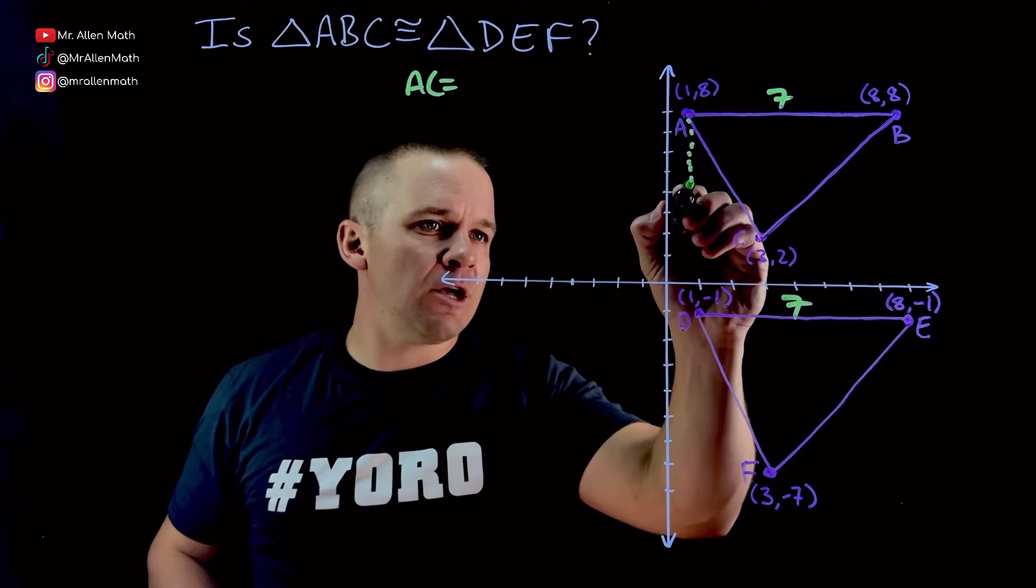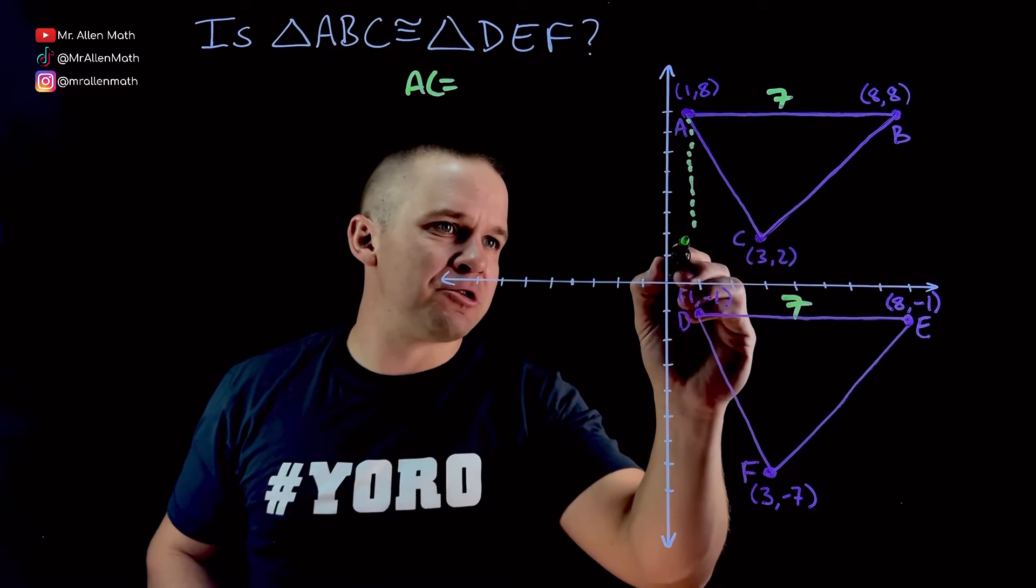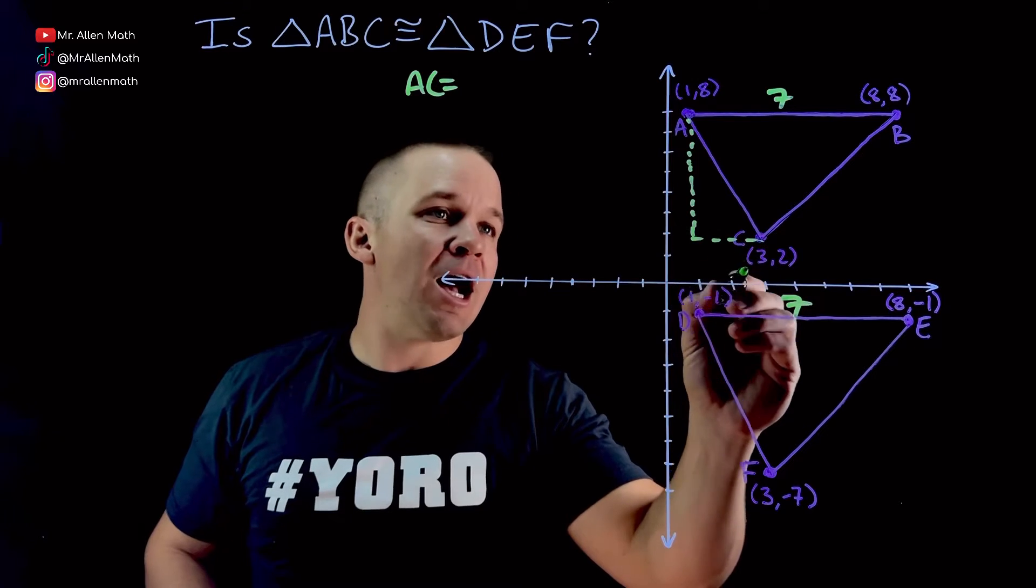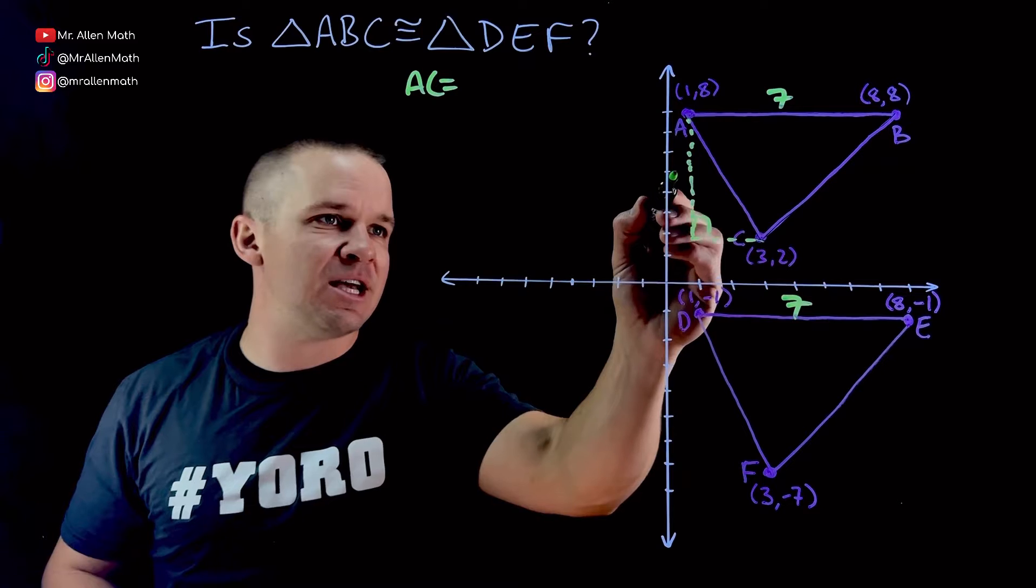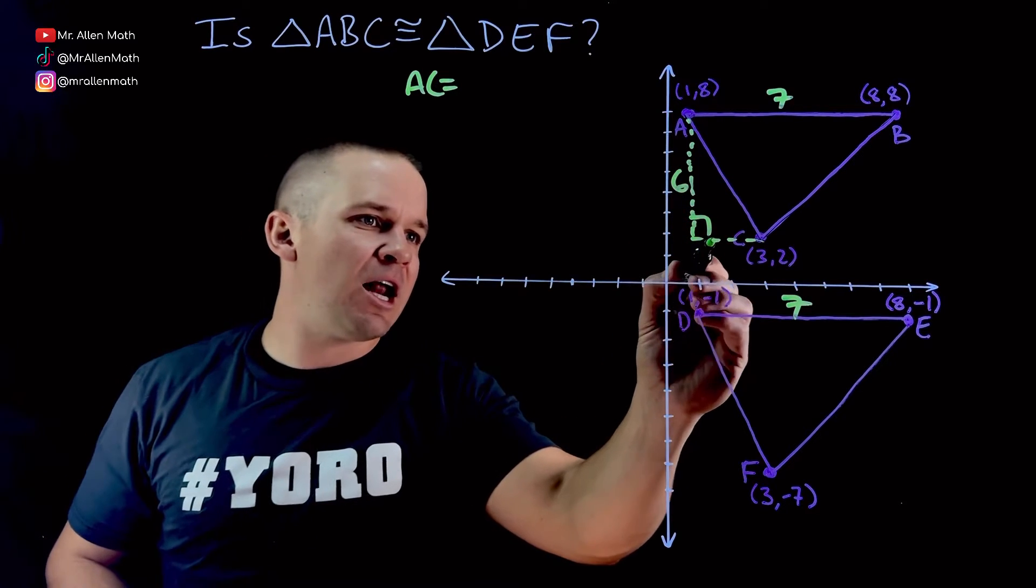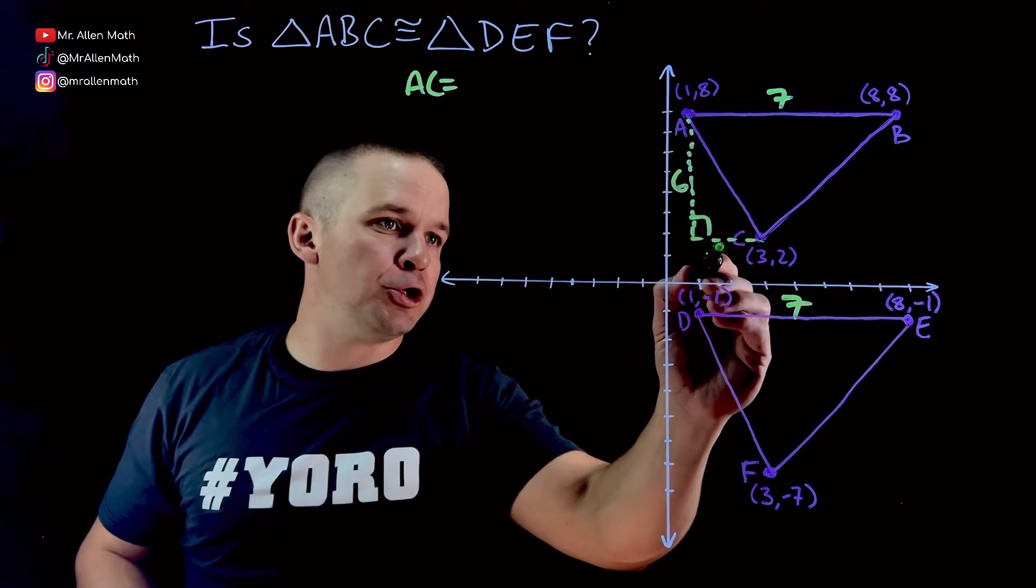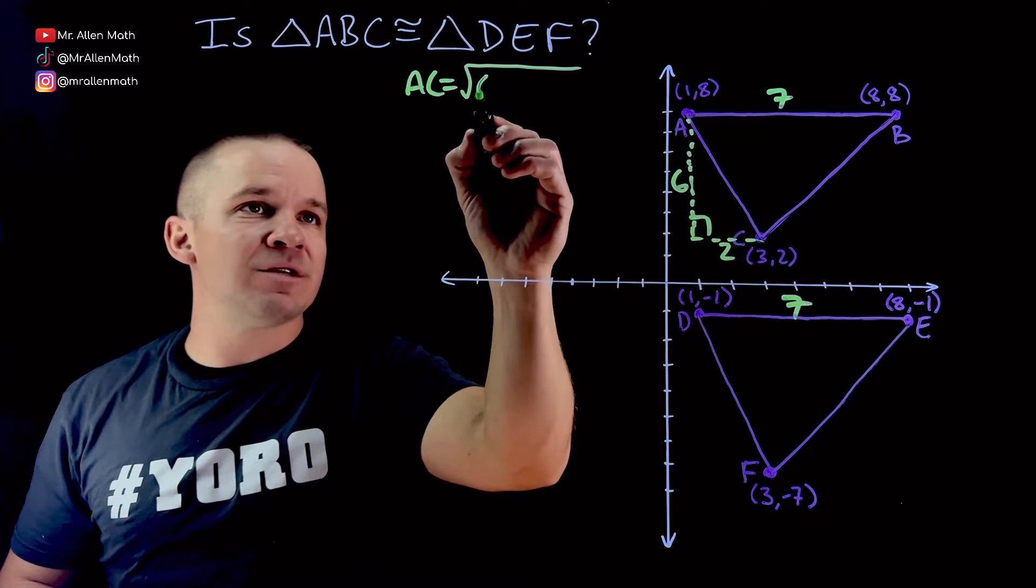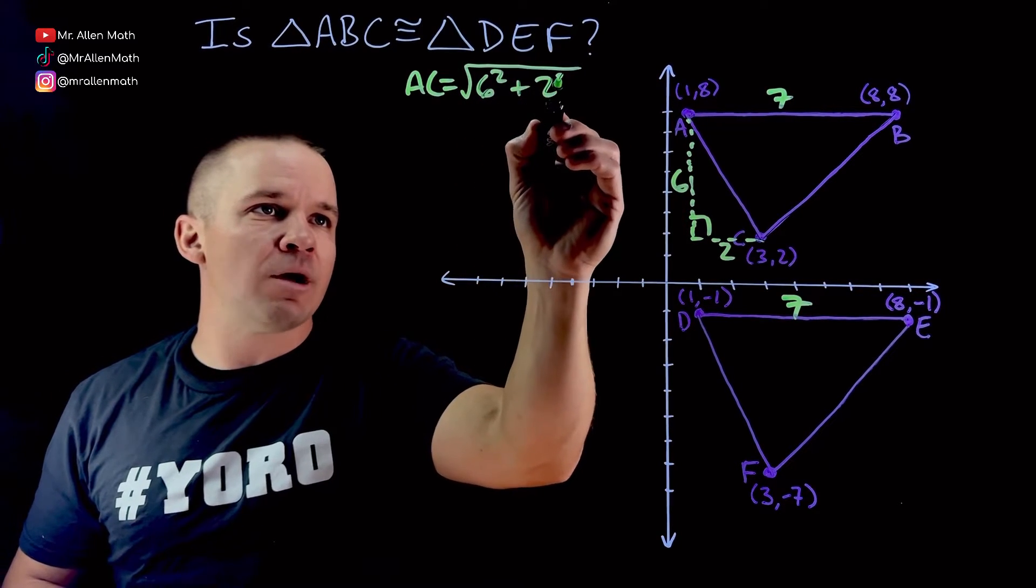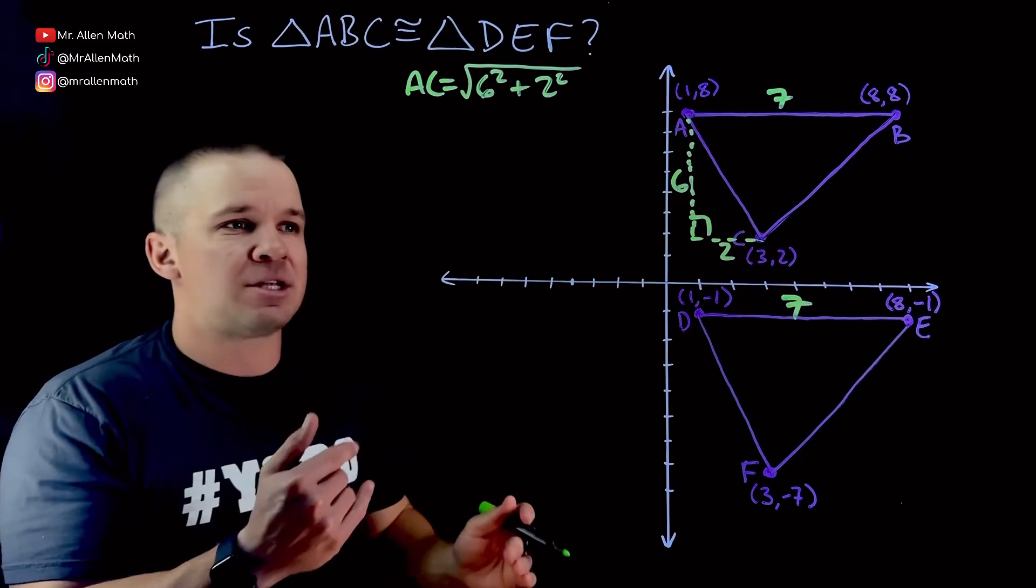So if I drop down here in a sort of straight line and then over, I create this right triangle, right? I went down 1, 2, 3, 4, 5, 6. This is a side length of 6. And I went over 1, 2. So we have the square root of 6 squared plus 2 squared. And you would get that as well if you did distance formula after a couple steps.